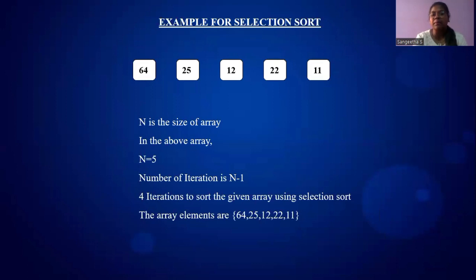We will see an example for selection sorting. Here the array consists of 5 elements: 64, 25, 12, 22, and 11, where the indexing starts from 0 to 4 and the total n value is 5. Number of iterations is n minus 1, therefore 5 minus 1 equals 4. Four iterations to sort the given array using selection sort.